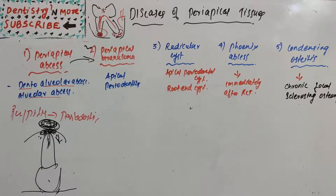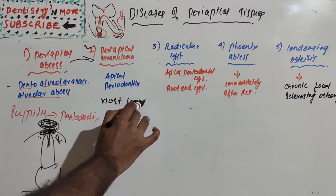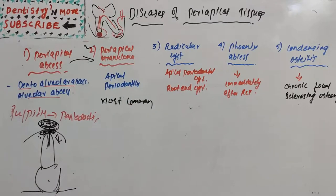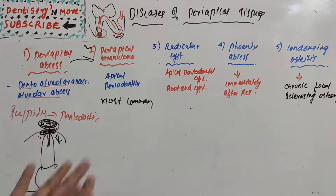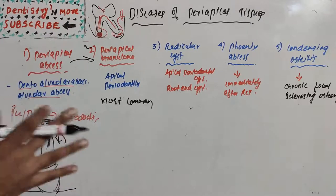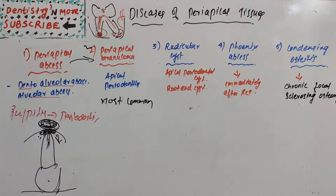The second disease is periapical granuloma, also known as apical periodontitis. It is one of the most common sequelae of pulpitis — a localized mass of chronic granulation tissue. Periapical abscess will not be visible on radiograph, but when the abscess transitions to a chronic granuloma over a longer duration, it becomes visible on radiograph.